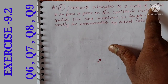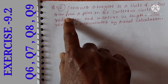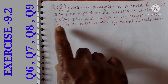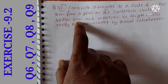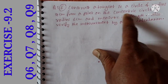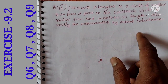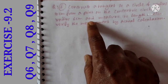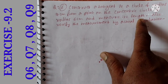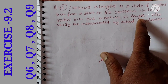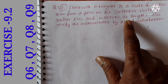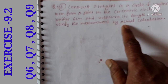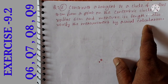Construct a tangent to a circle of radius 4 cm from a point on the concentric circle of radius 6 cm. What is the concentric circle? The center is the same but the radius is different. If you draw a tangent, you can also measure its length by actual calculation.